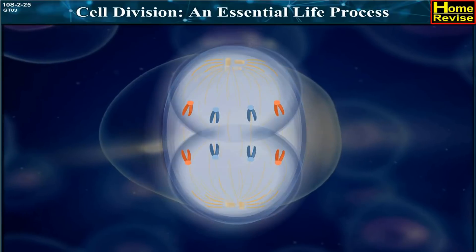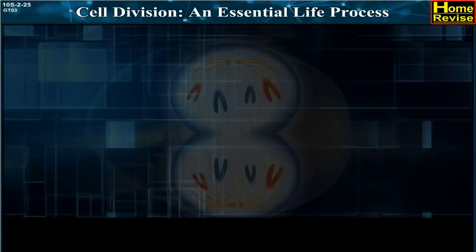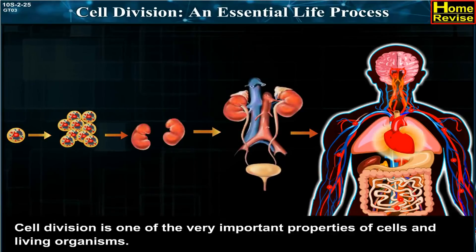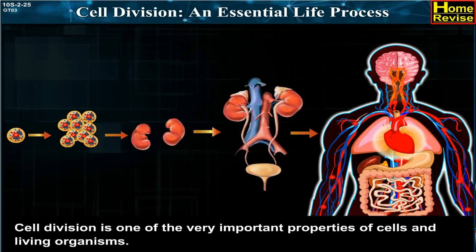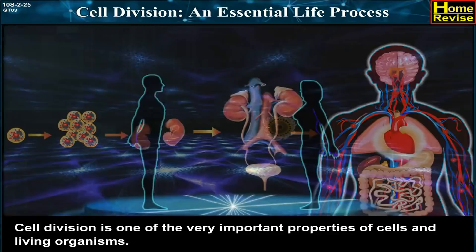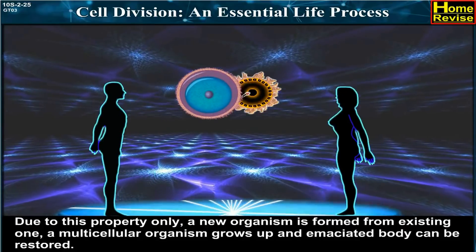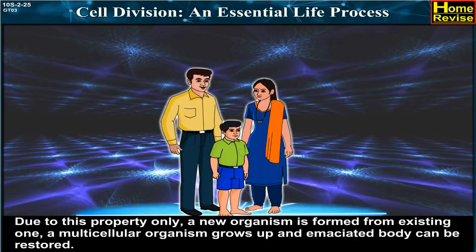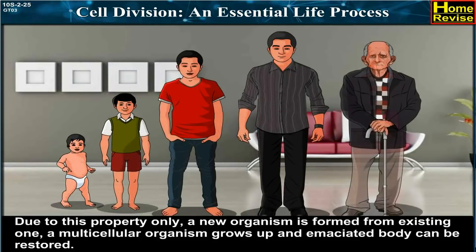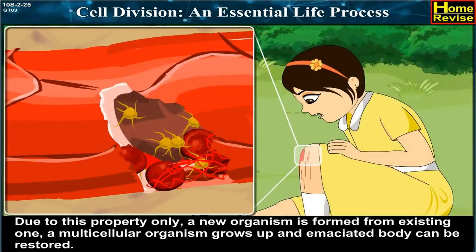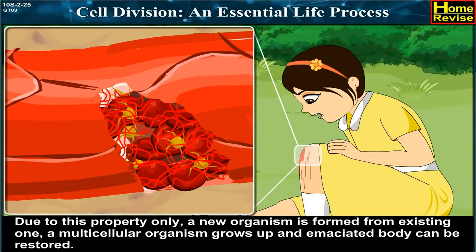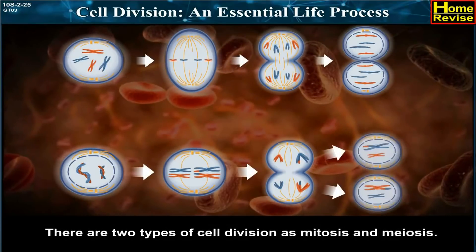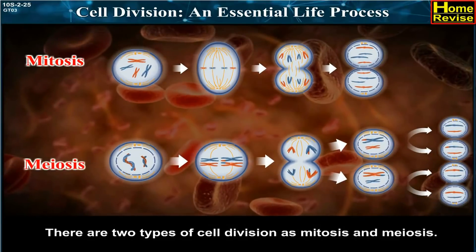Cell division is one of the very important properties of cells and living organisms. Due to this property, a new organism is formed from an existing one, a multicellular organism grows up, and an emaciated body can be restored. There are two types of cell division: mitosis and meiosis.